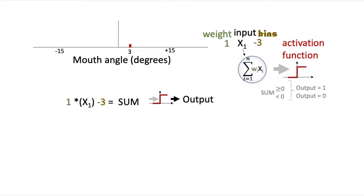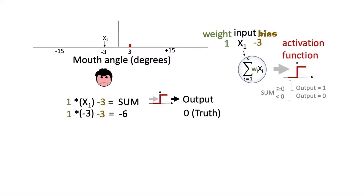Let's walk through some specific examples of your perceptron model making predictions. If Sam's mouth angle is negative 3 degrees, the perceptron takes the sum: 1 times negative 3, minus 3, which equals negative 6. Applying the activation function, since negative 6 is less than 0, the output is 0, which corresponds to the prediction that Sam is telling the truth. So when Sam's mouth is at angle negative 3 degrees, he's telling the truth.